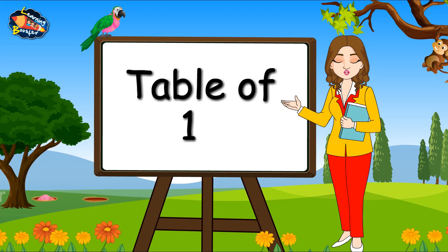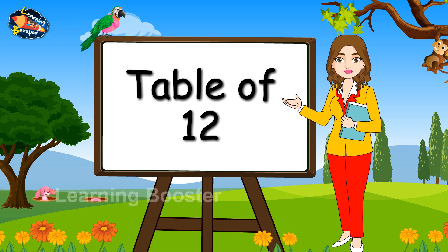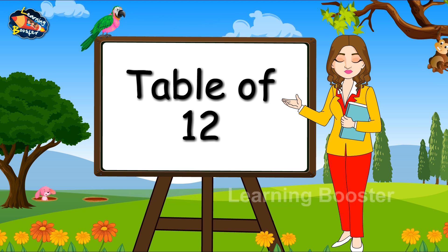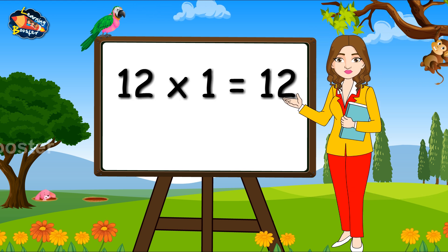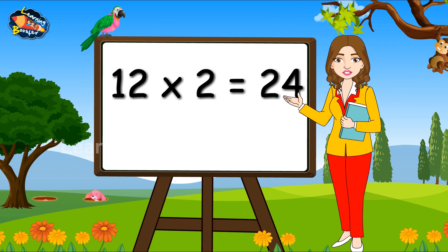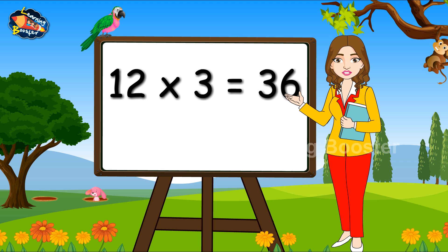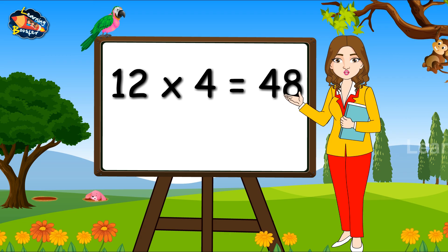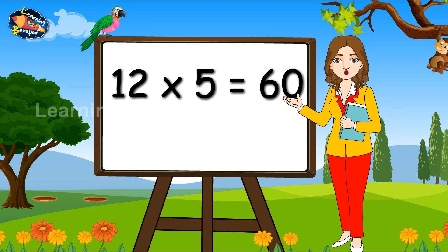Table of Twelve. 12, 1's are 12. 12, 2's are 24. 12, 3's are 36. 12, 4's are 48.